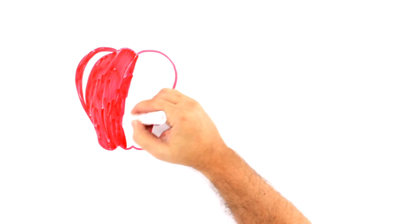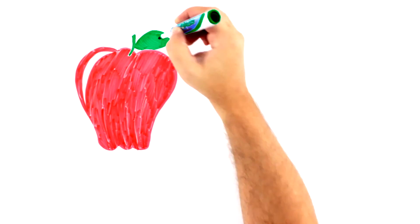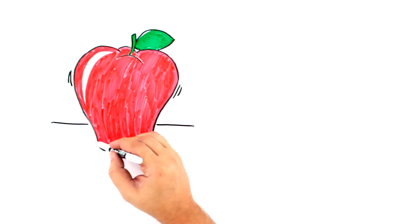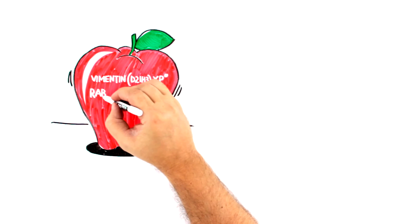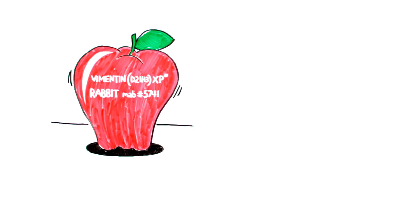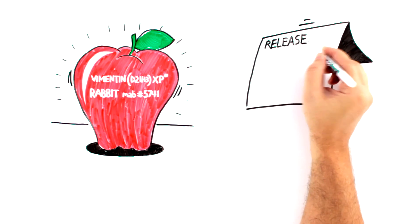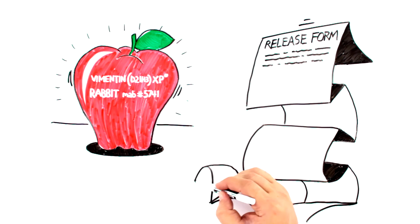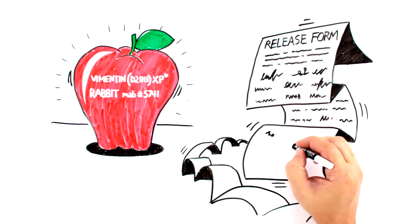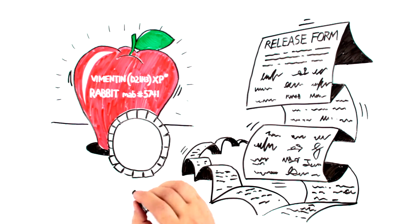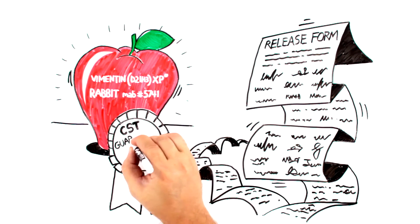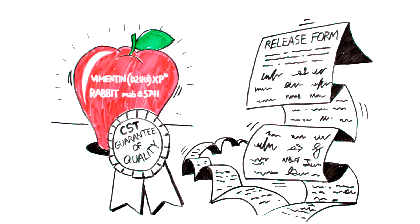Finally, clone D21H3's journey from being one of a thousand clones to becoming a Vimentin D21H3 XP Rabbit monoclonal antibody comes to an end. But not before every scientist involved in the development or production of this product signed a release form. That means every product we sell has our personal and scientific guarantee of quality and customer support behind it.